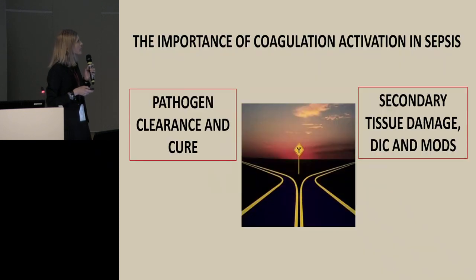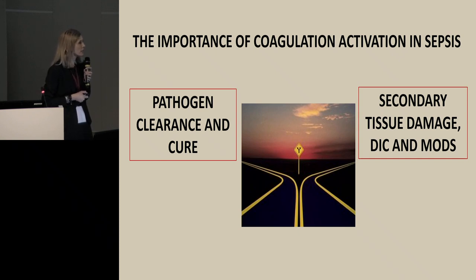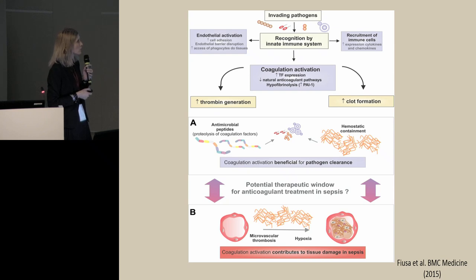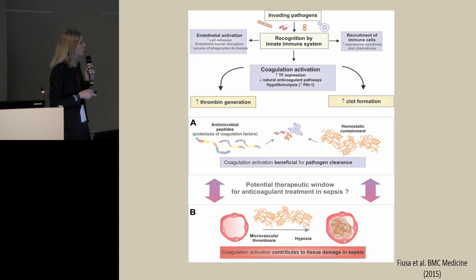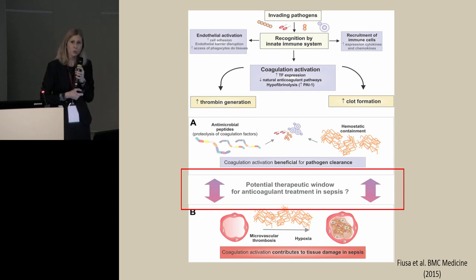So immunothrombosis is important: coagulation activation in sepsis can either lead to pathogen clearance and a good outcome, or if too exaggerated, it can lead to secondary tissue damage and organ dysfunction, turning into DIC. What would be ideal is to identify exactly the moment when coagulation activation becomes detrimental from a beneficial process — because that is when we need to give anticoagulant treatments. This is the therapeutic window.